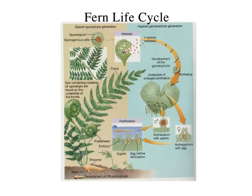The bryophytes spend about 50% of their life diploid and 50% haploid. Ferns start to spend maybe three-quarters of their life diploid and much less as haploid. That's a trend that's going to continue as we get more evolutionarily advanced.